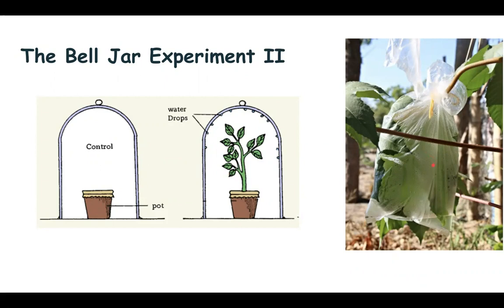This process of transpiration can also be studied easily at home. You can cover any plant part with a piece of polythene paper, wrap it up nicely, and after an hour or so — depending upon the rate of transpiration — we are able to see mist formation on the inner surface and even deposition of a clear liquid, which tells us that this liquid has come from the leaves by the process of transpiration.